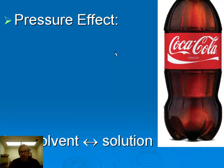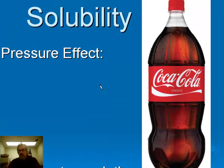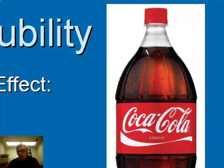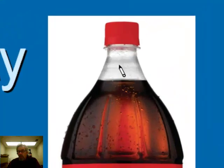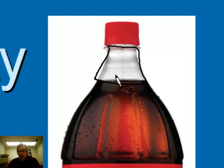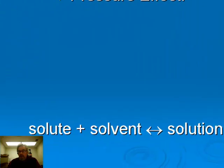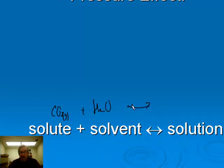There's a pressure effect on solubility, but it only involves gaseous solutes. Gaseous solutes are present in soda pop, so we'll use Coca-Cola as an example. When they bottle it, they create a high vapor pressure of carbon dioxide in the space above the liquid. The relevant equilibrium is: CO2 gas plus H2O in dynamic equilibrium with carbon dioxide in aqueous solution. Up in that space, there are particles of water vapor and, importantly, carbon dioxide particles.